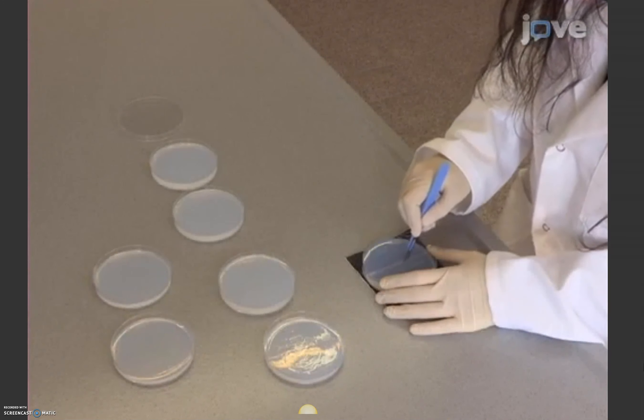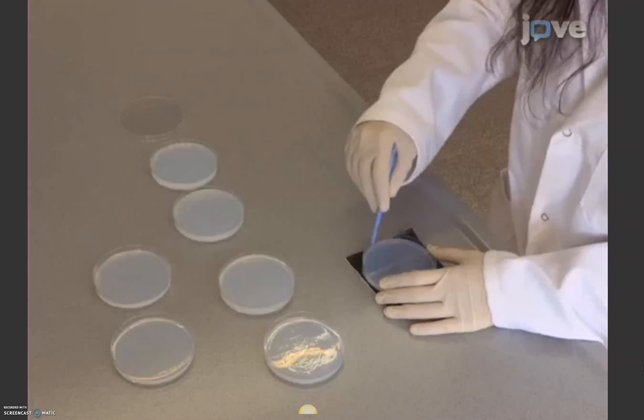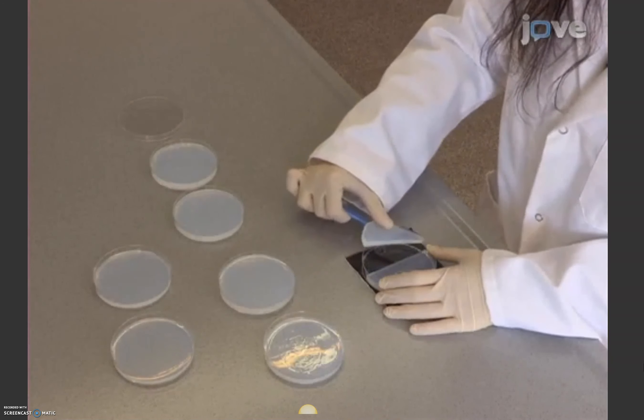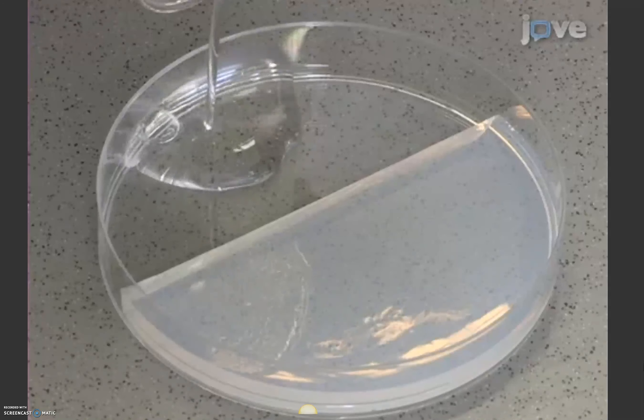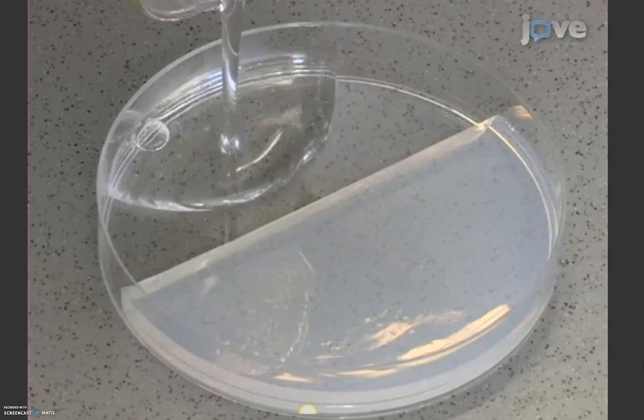To test for naive sugar preference, prepare half-half petri dishes by cutting out half the agarose of a cooled dish and filling the vacant space with molten agarose of the other type.